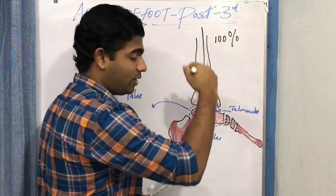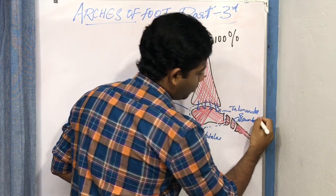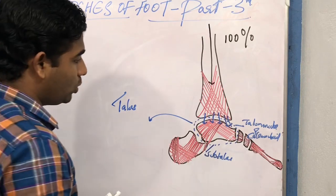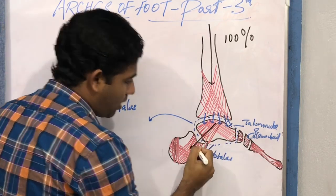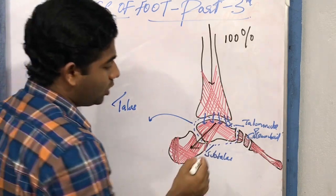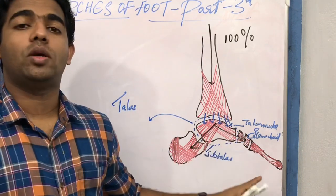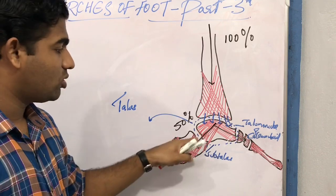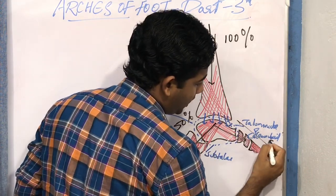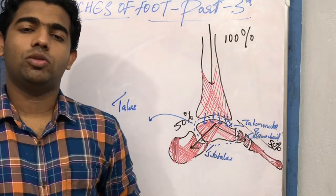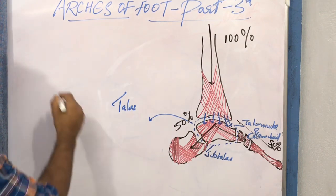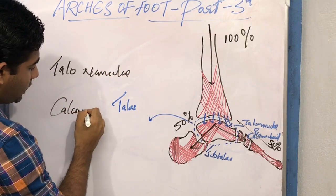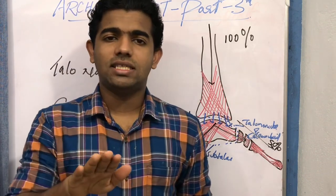On the lateral side we have the calcaneo-cuboid joint. The weight distribution strategy is: 50% of the body weight passes on to the subtalar joint and the remaining 50% passes on to the talo-navicular and calcaneo-cuboid joints. You need to understand that the talus is located slightly to the medial side, meaning it is in line with the talo-navicular joint.